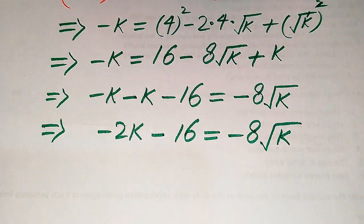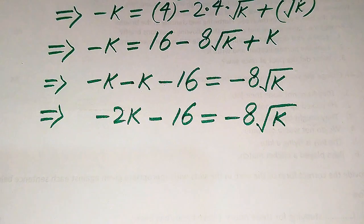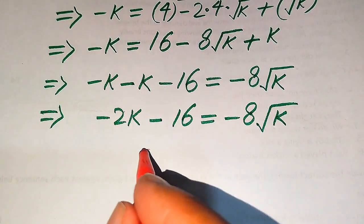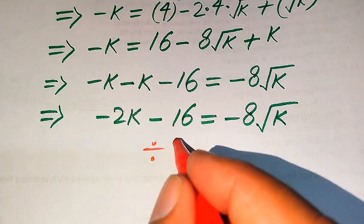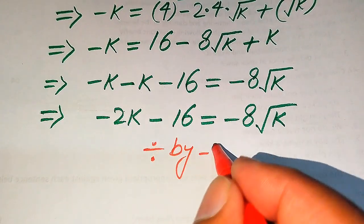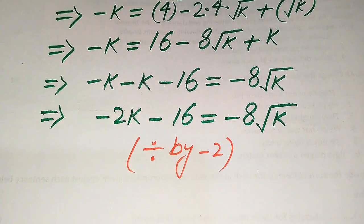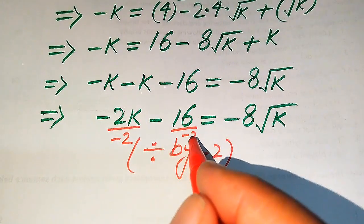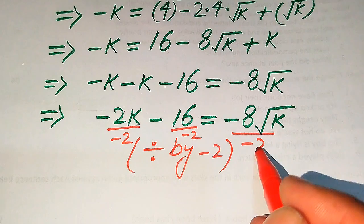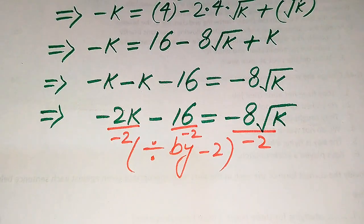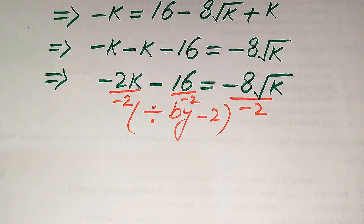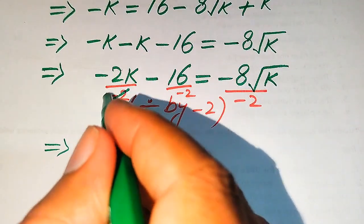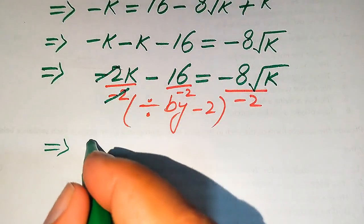Both terms on the left have a coefficient divisible by 2, so we divide both sides by minus 2. Each term is divided by minus 2, and after dividing, the minus 2 cancels to give simplified values on each side.